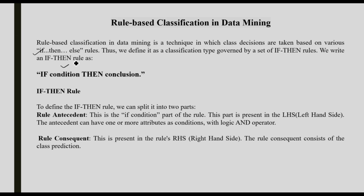Now we are going to look at the if-then rule. An if-then rule consists of a condition part and then a conclusion. That is why we call it an if-then rule — a condition, and then a conclusion.